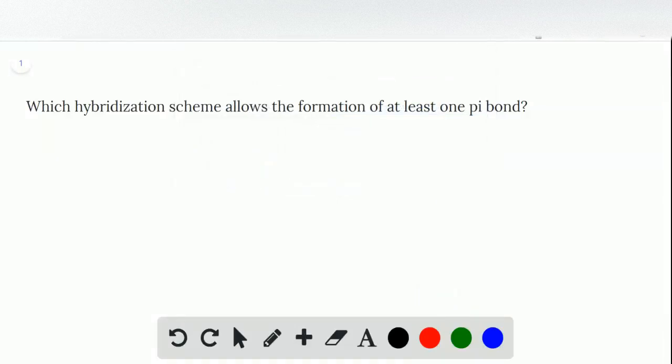So there are two correct answers to this one. In order to form at least one pi bond, we have to have a p orbital that's not hybridized. Since we have three total p orbitals,